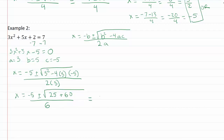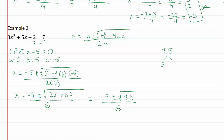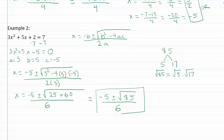Combining under the radical gives plus or minus the square root of eighty-five, all over six. This eighty-five is not a perfect square, but I might still be able to reduce the radical through prime factorization. Eighty-five is divisible by five: five times seventeen. So the square root of eighty-five equals the square root of five times the square root of seventeen, but neither factor is a perfect square, so I can't simplify further. This expression is my final answer.